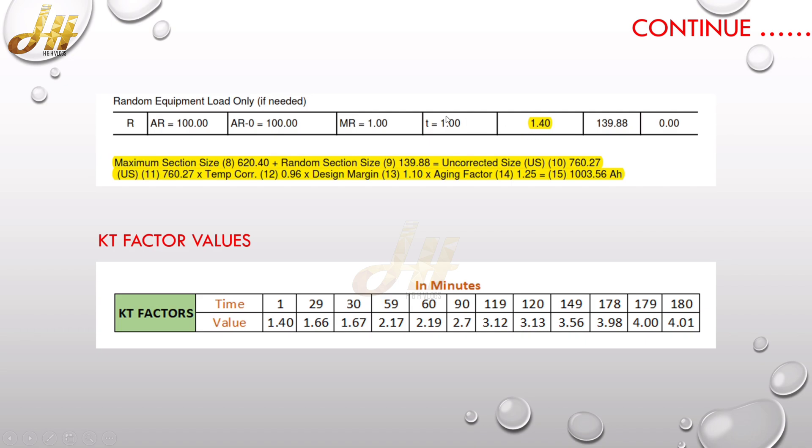So it is mentioned as 100 ampere for one minute. As we discussed, the KT factor value for one minute is 1.40, so we will get 139.88 as the capacity value.